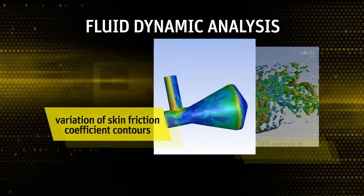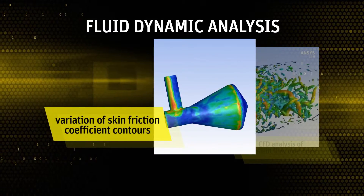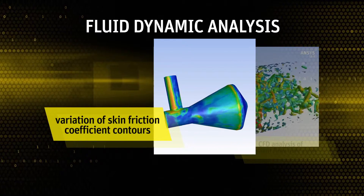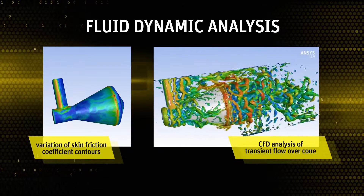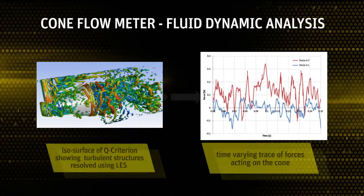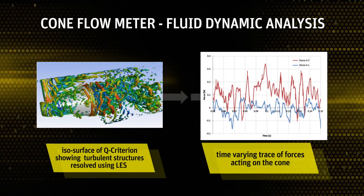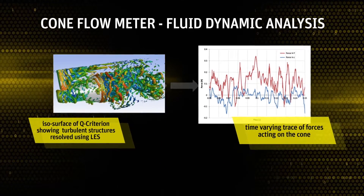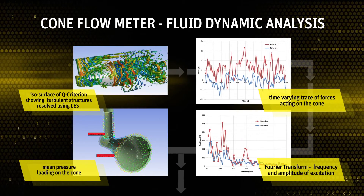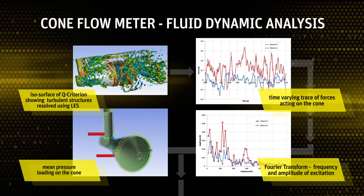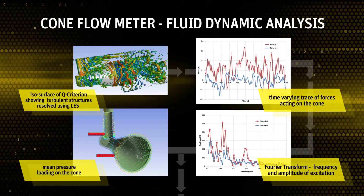The animation on the left shows the variation of the skin friction coefficient contours on the surfaces of the cone caused by changing forces acting on the surface. Engineers are able to monitor the transient force components acting on the cone over a period of time. Then, using the fast Fourier transform function in ANSYS Fluent, they are able to obtain the frequency and amplitude of the fluid dynamics force due to the vortex shedding.